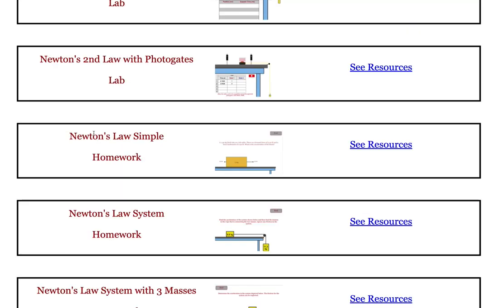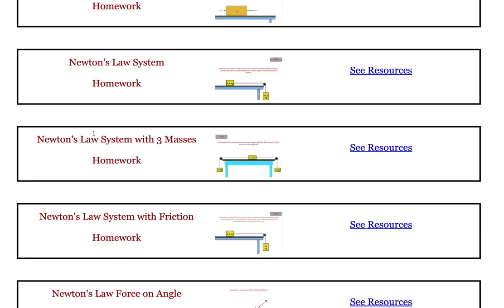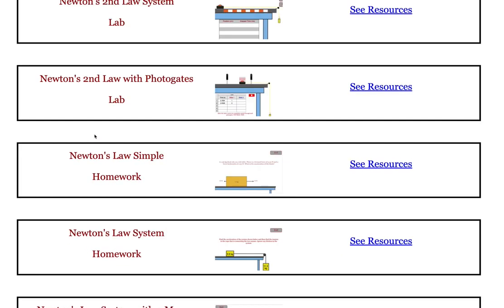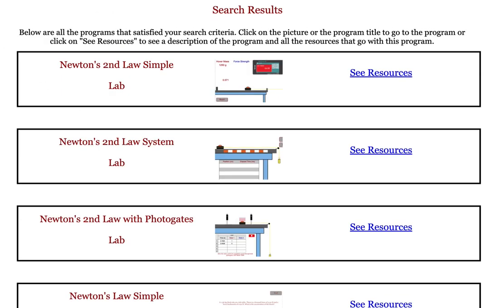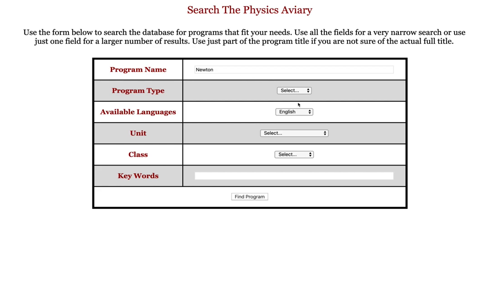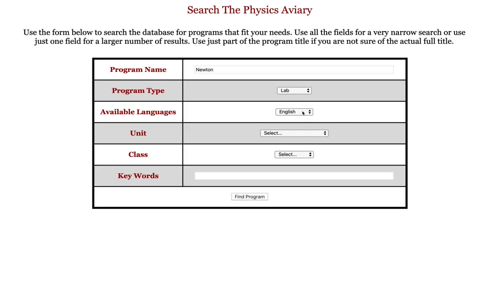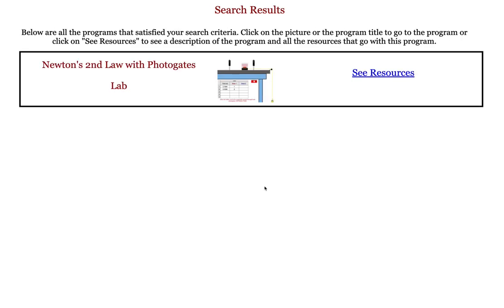We'll find all the programs that have the word Newton as part of the title. If you know you want to do a lab, you could further reduce this by changing it to just labs, and then if you wanted to see only the ones available in a certain language that meet that criteria, you could add that in also.